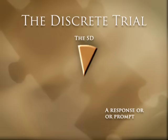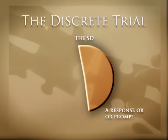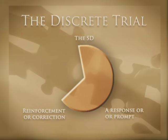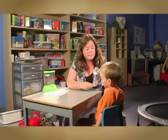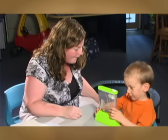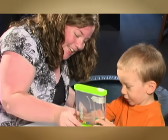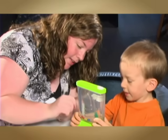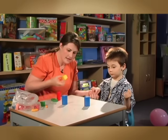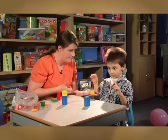We will now move on to the third and final component of a discrete trial: reinforcement or correction. Once an SD has been given, the child responds in one of two ways — either the child responds correctly and reinforcement is delivered, or the child responds incorrectly and a corrective procedure is applied. We will begin with reinforcement, which is sometimes called a reward. When providing reinforcement to a child, there are several key points to keep in mind in order to maximize its effectiveness.